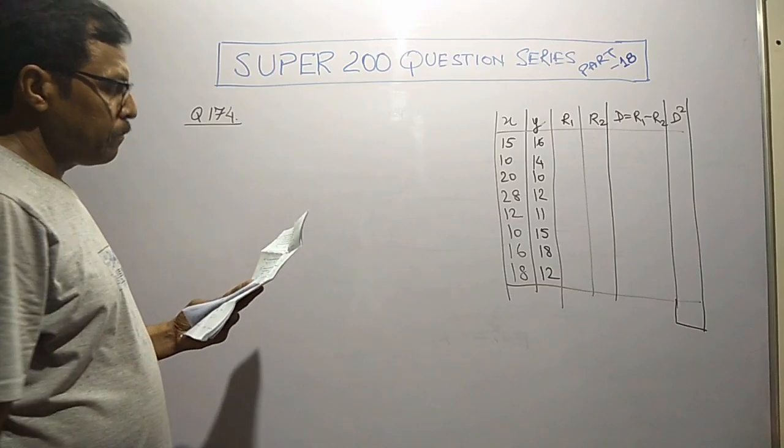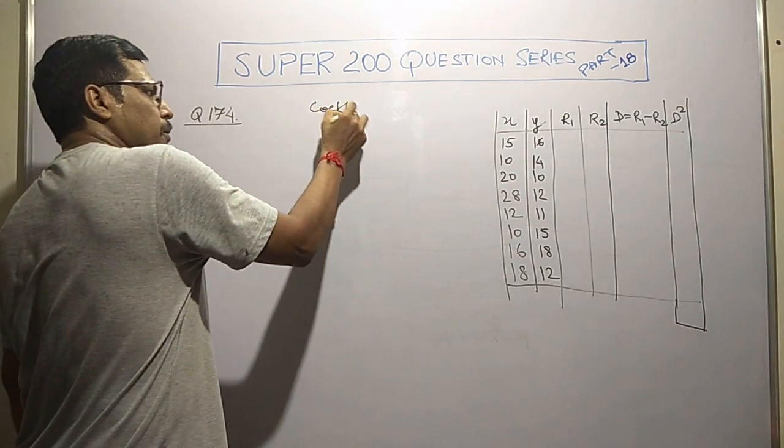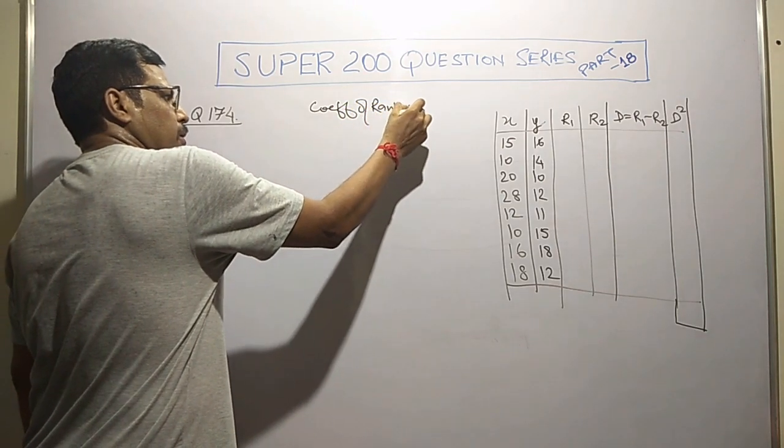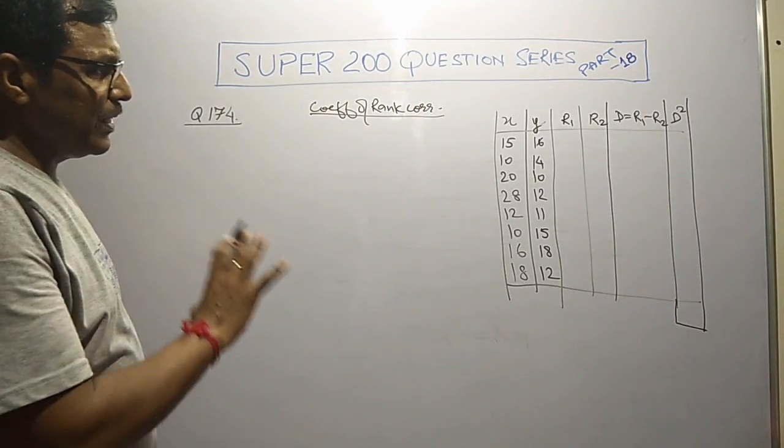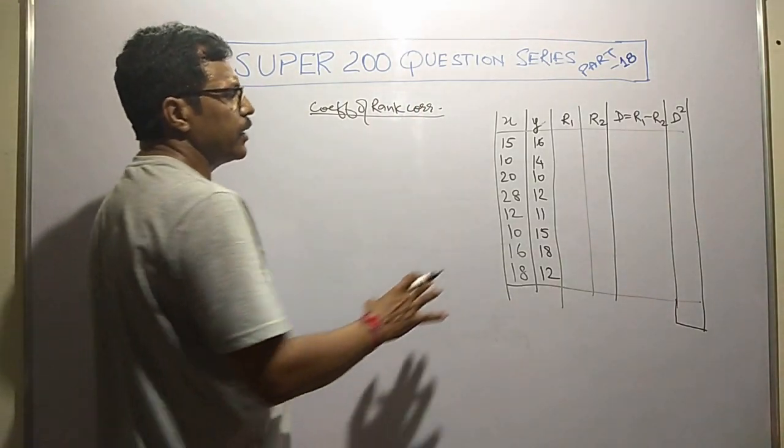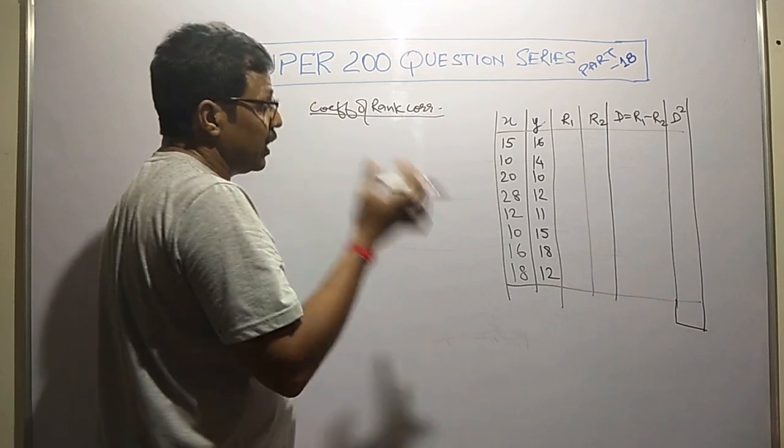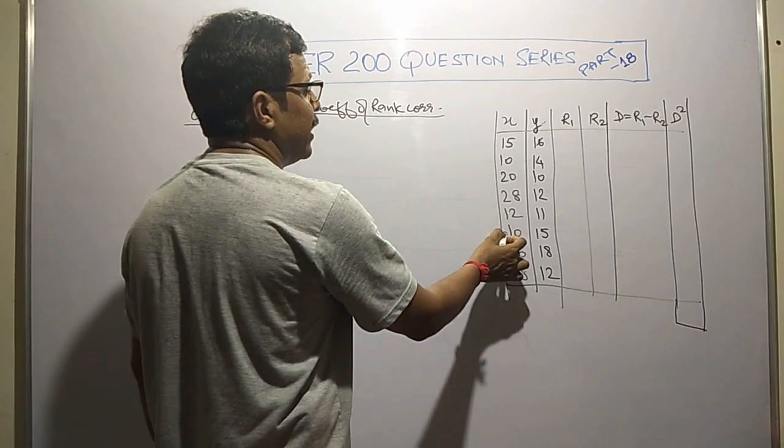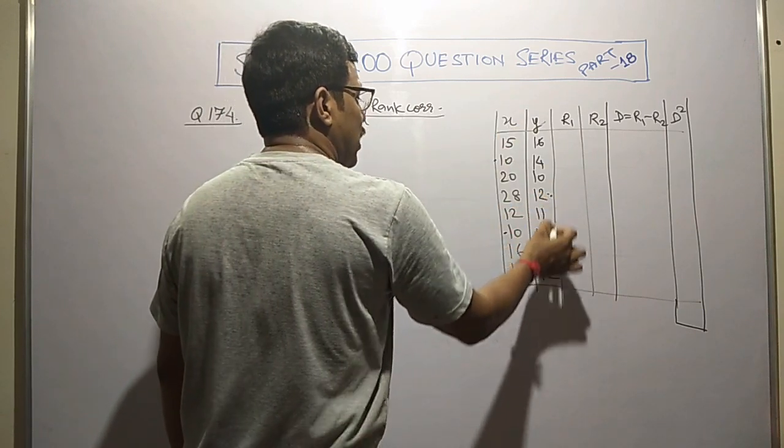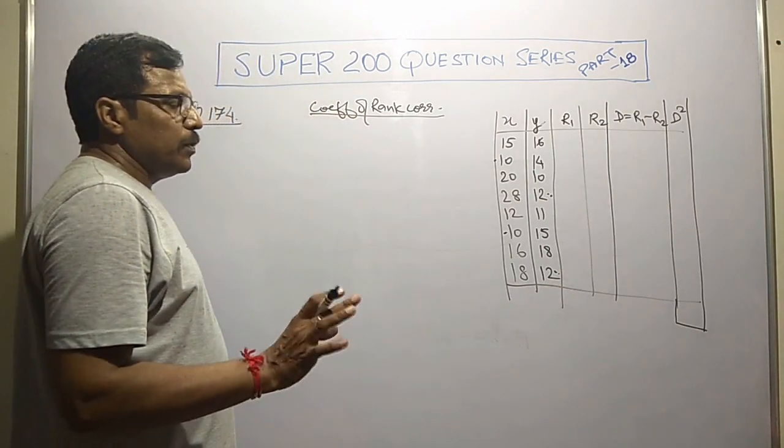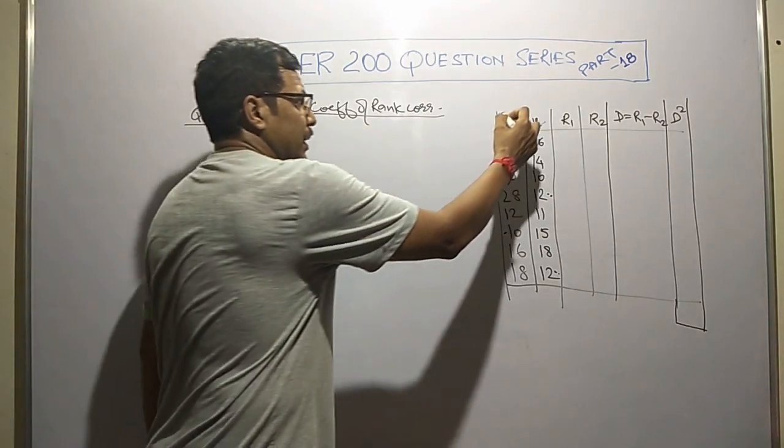Here it is question number 174. We are given this data and we need to find out the coefficient of rank correlation. In the last video we went through one such sum, but this is different. Here the values are getting repeated in both x and y variates.